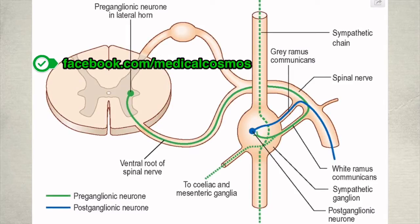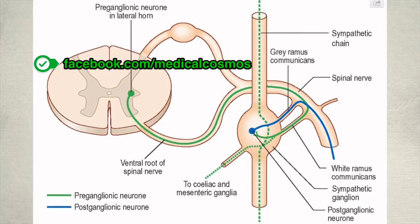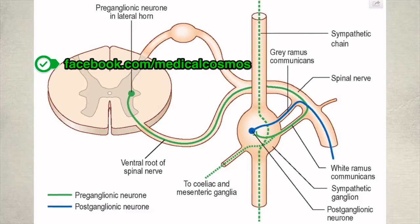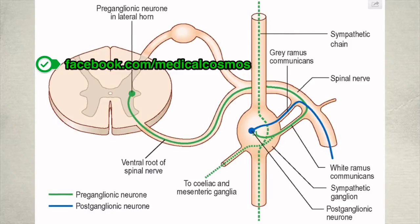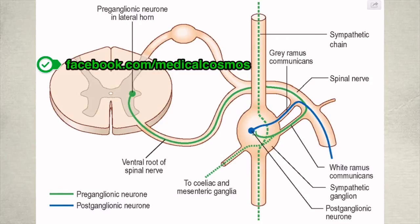The key concept here is that the sympathetic ganglia receive fibers from the ventral root, and these fibers may either ascend or descend within the sympathetic chain, or carry a new nerve fiber onward. As you may see, there are connections going to the celiac and mesenteric ganglia, or the fibers may continue along the spinal nerve.